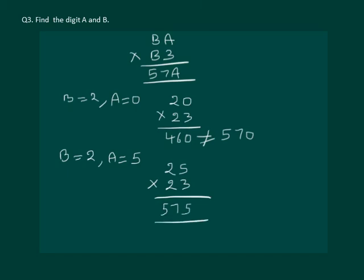Since 575 satisfies our condition 5 7 and A is 5 here, we say that B is equal to 2 and A is equal to 5 is the required answer. Thank you.